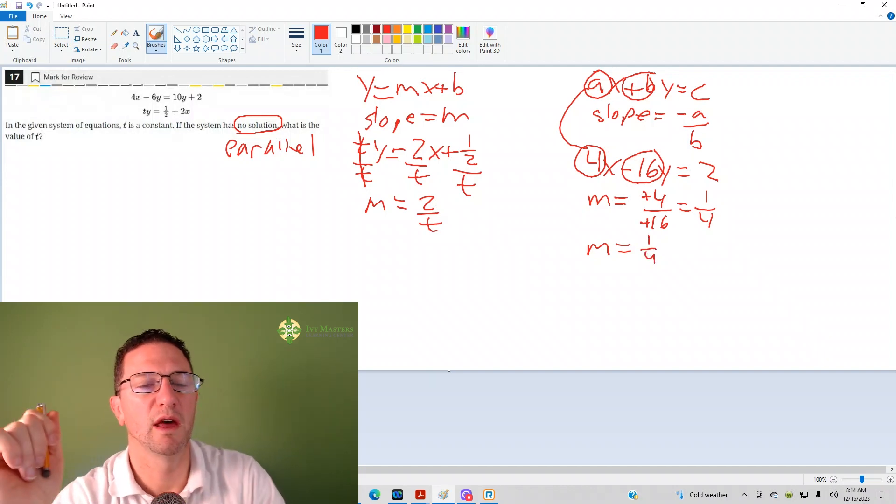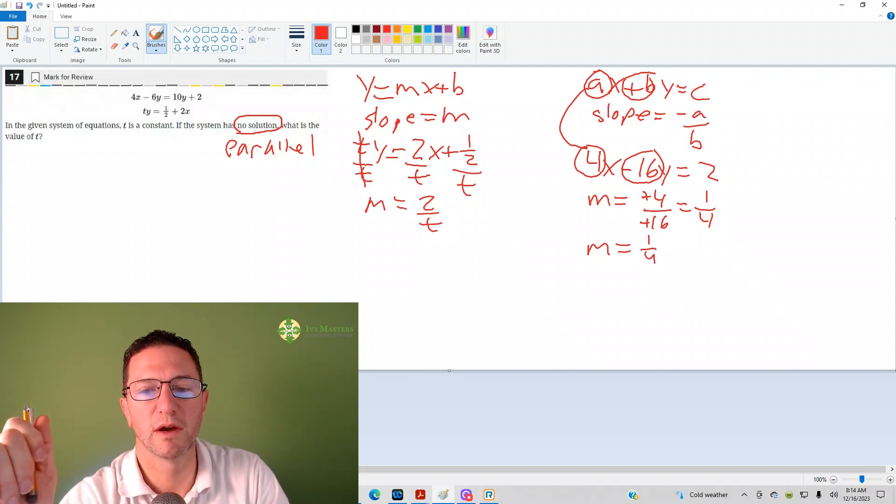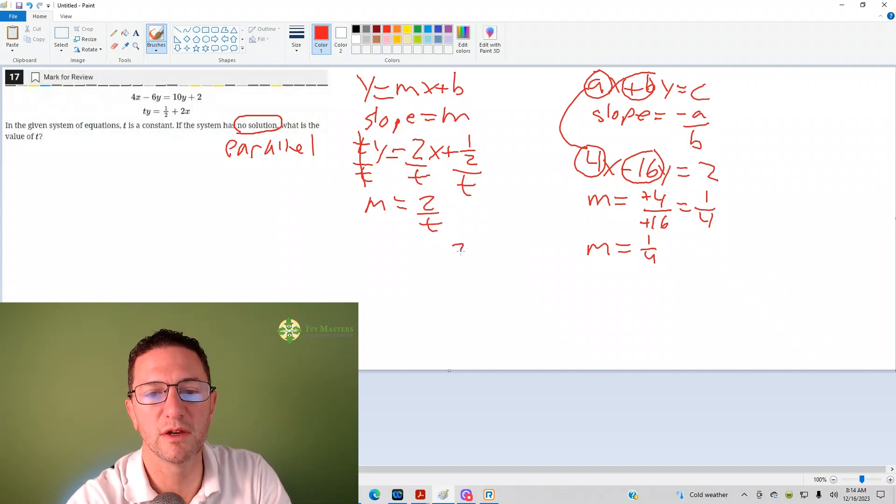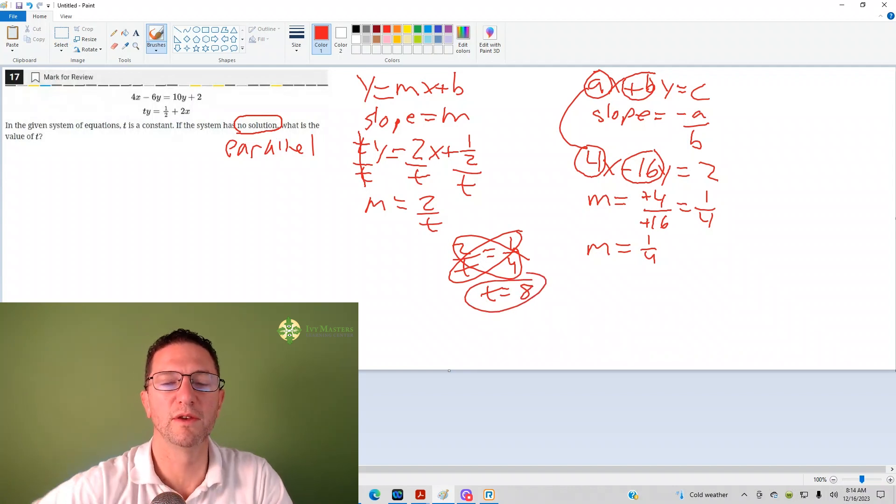Now, we already said that if there's no solution, the lines are parallel. The lines are parallel, they have the same slope. So what I'm going to do is I'm going to set these equal to each other. 2 over t equals 1 over 4. And when I cross multiply and solve, I get t equals 8. It's another way to do it.